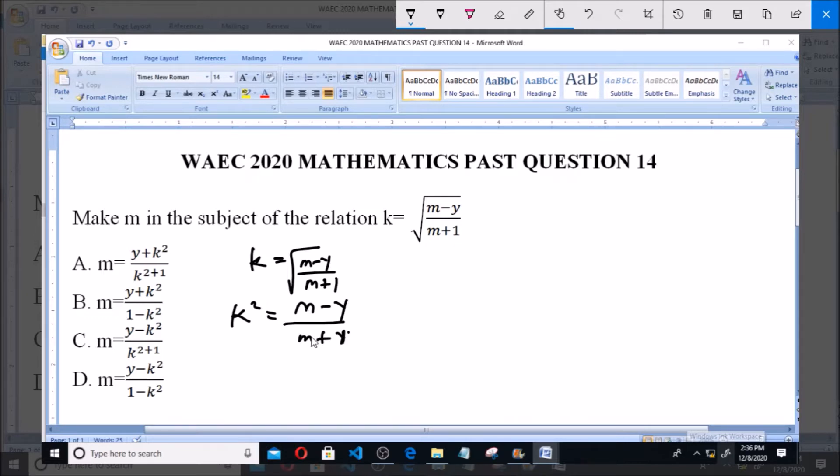Now we cross multiply, giving us k squared times (m plus 1) equals m minus y. So we have k squared times m, which gives us k squared m, plus k squared times 1, which gives us k squared, equals m minus y. Now when we collect like terms...